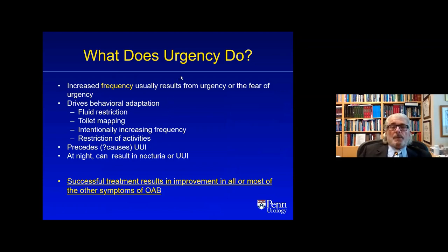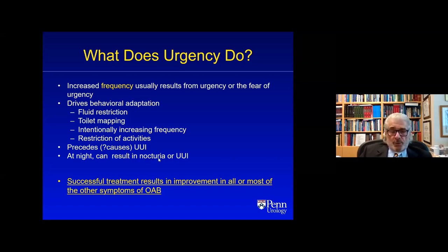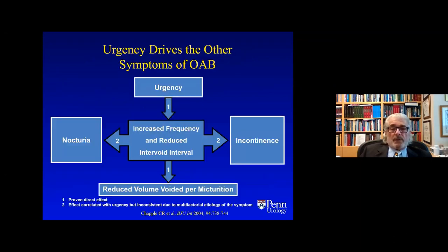What does urgency do — what are the consequences? It causes increased frequency. It drives all the behavioral adaptations that people with OAB make: fluid restriction, always knowing where the bathroom is, prophylactic voiding, and restriction of activities. It precedes urgency urinary incontinence, and at night it can result in nocturia or urgency urinary incontinence. OAB is not one of the predominant causes of nocturia, which is why OAB medications don't work very well for nocturia. If you treat urgency successfully, that will result in improvement in most other OAB symptoms — urgency is really the driver.